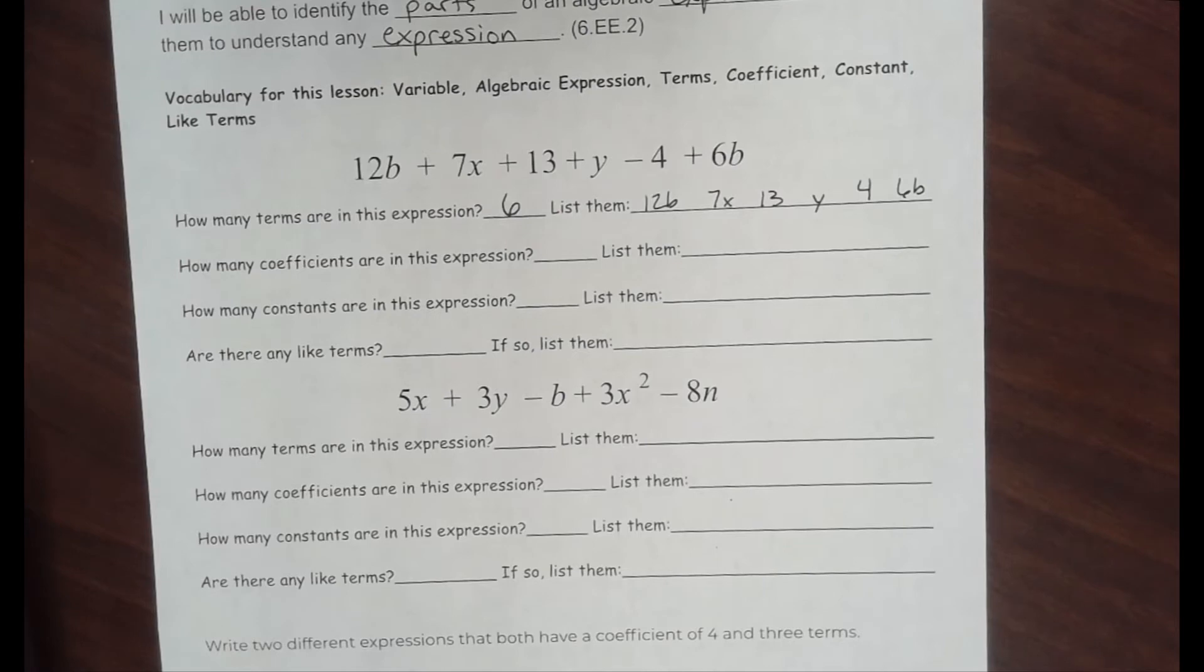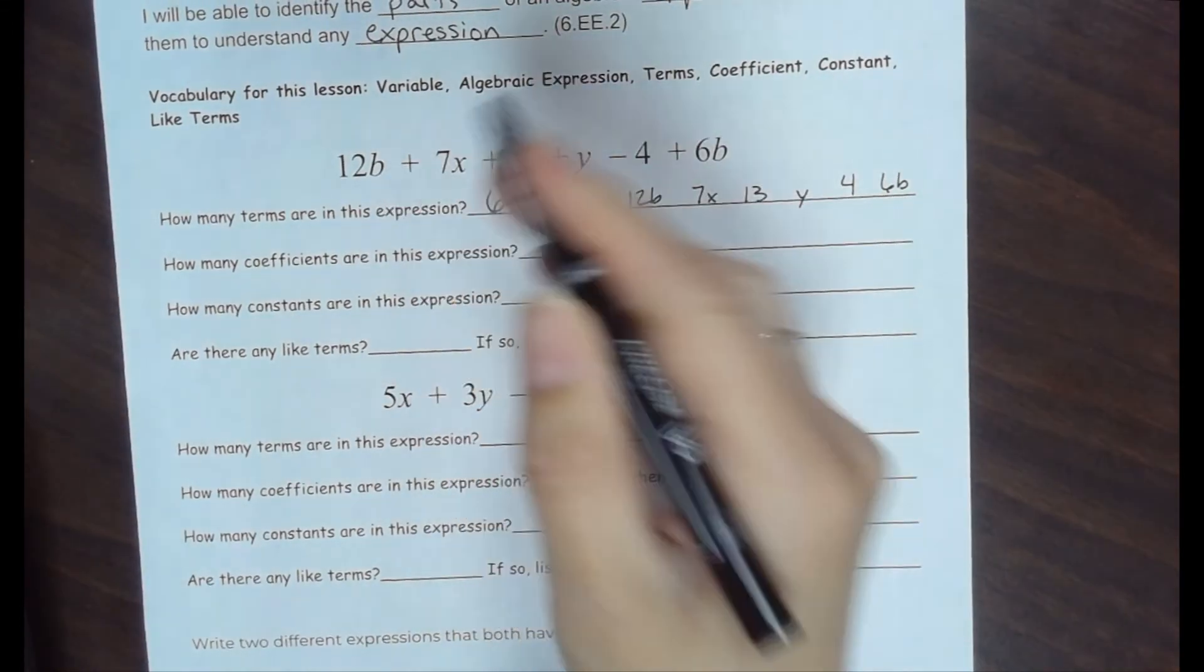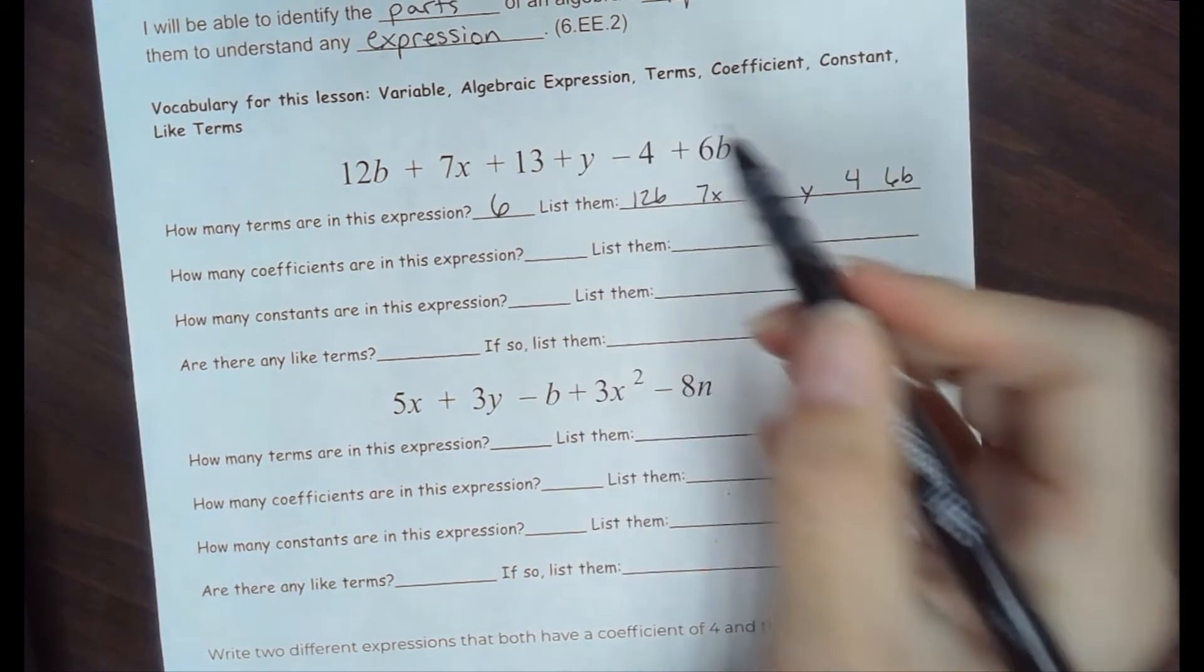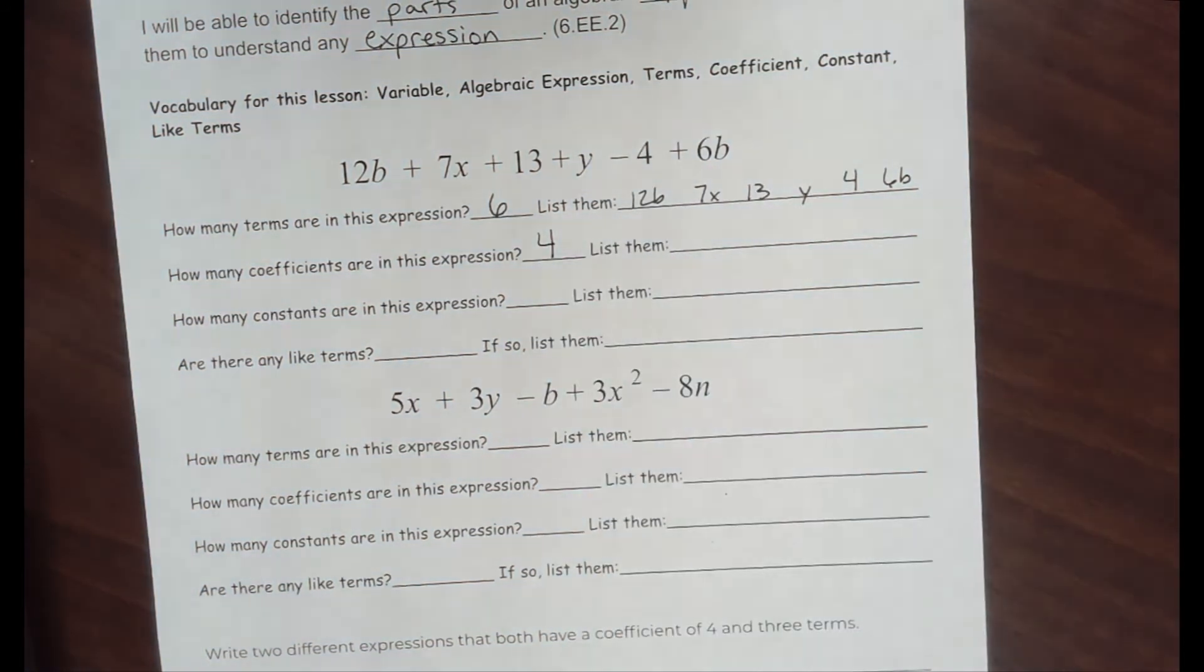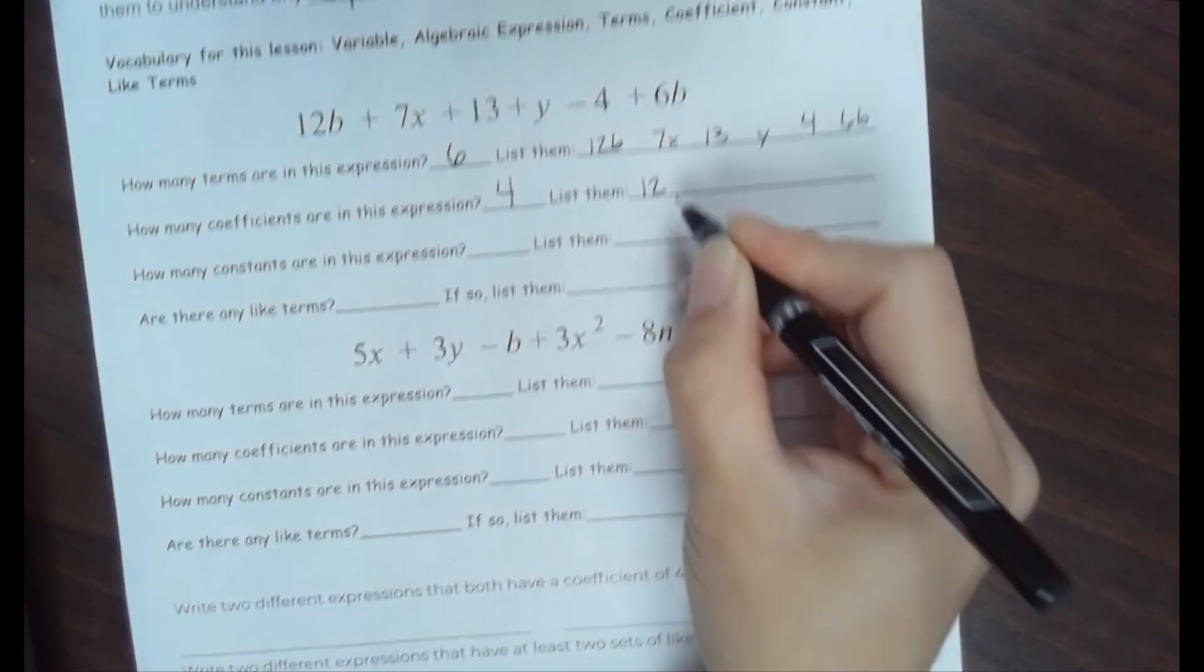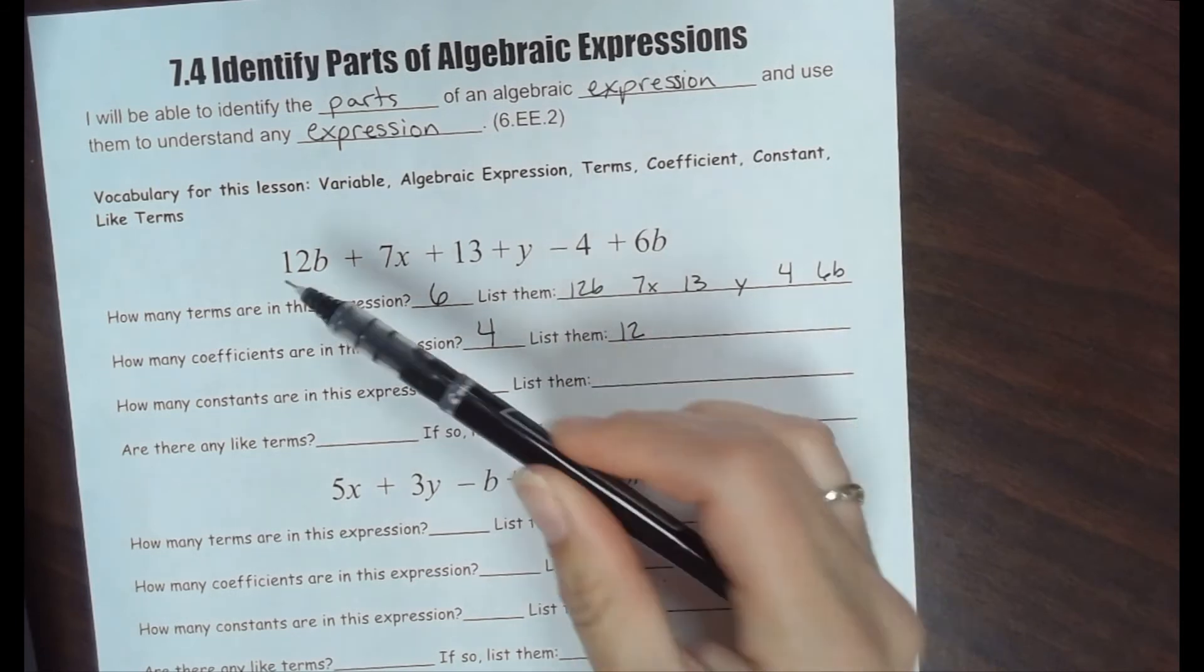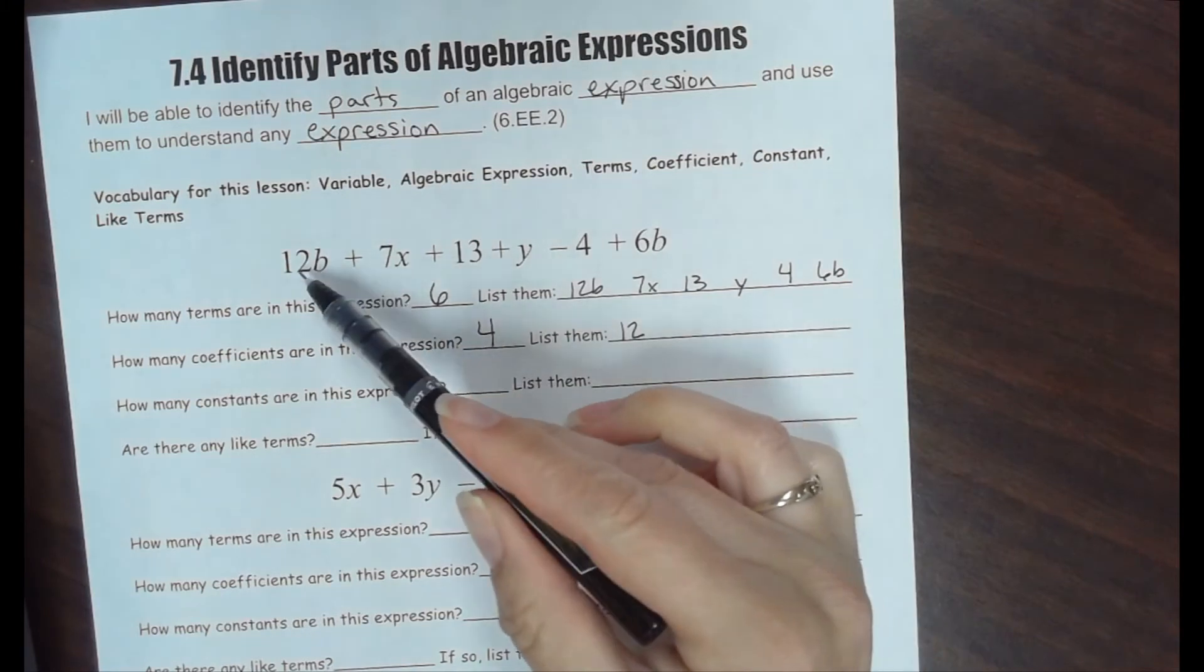How many coefficients are in this expression? For every variable you see, there is a coefficient. We have 12 with b, so there's 1, 2, 3, 4. There's 4 variables, so there are going to be 4 coefficients. If we list all the coefficients, 12 is a coefficient. Notice, I'm not saying 12b. 12 is a coefficient. It's the number being multiplied to b. 12b is the entire term, but 12 is a coefficient.